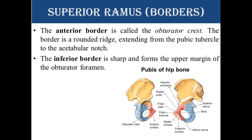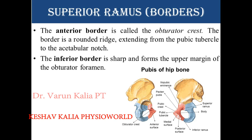The anterior border is called the obturator crest — a rounded ridge extending from the pubic tubercle to the acetabular notch. The inferior border is sharp and forms the upper margin of the obturator foramen.